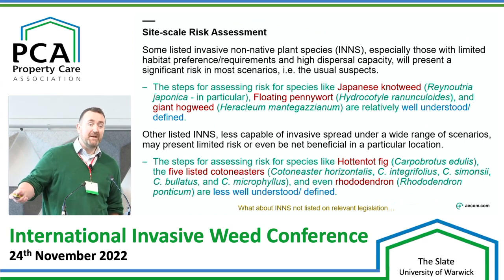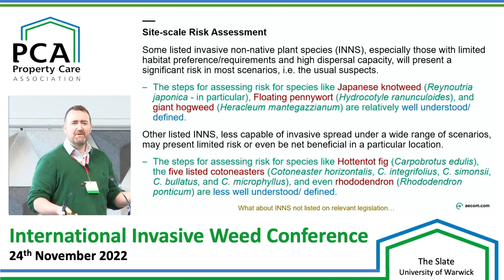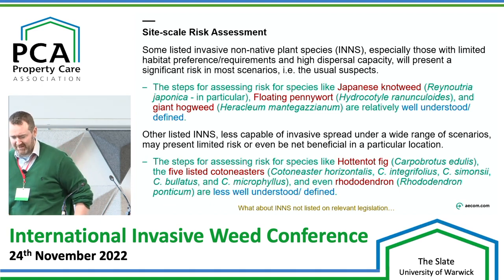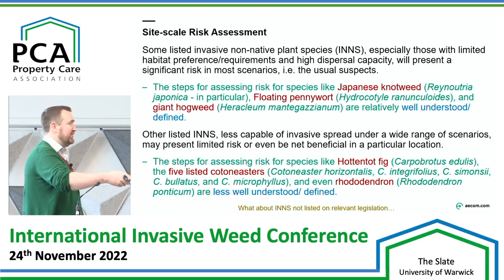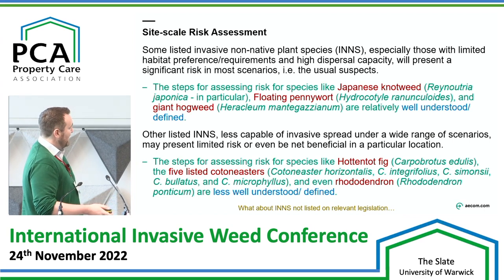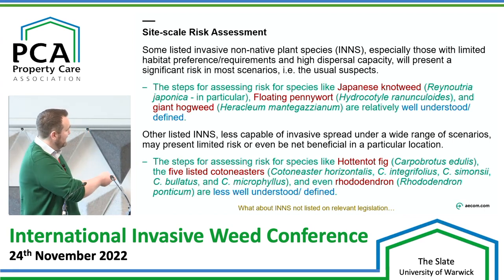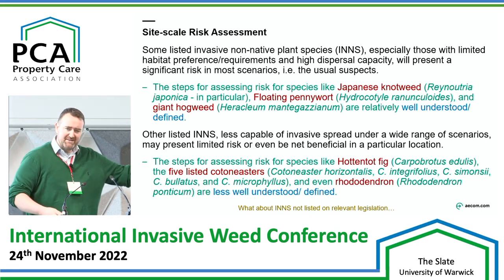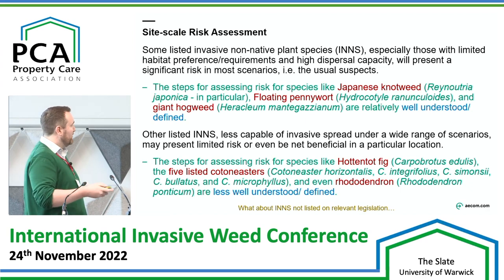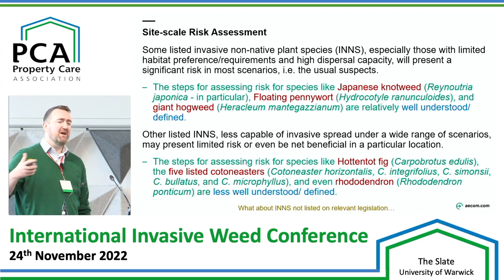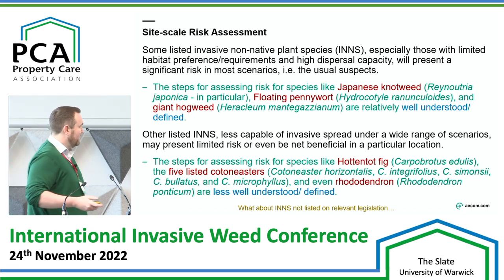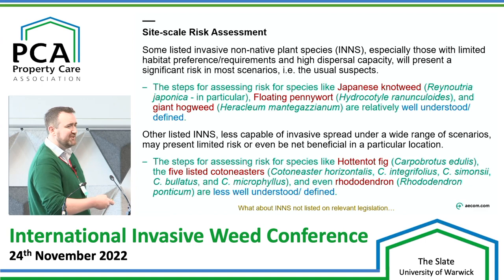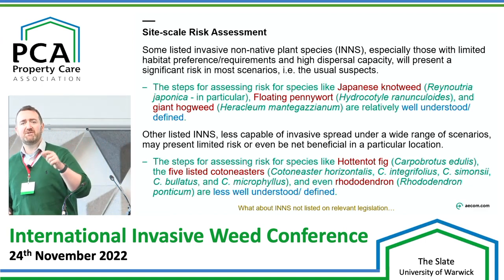When it comes to certain species — Japanese knotweed, floating pennywort, giant hogweed — the risk assessment process is pretty straightforward. If you've got it on your site, you don't really want it there, so you're going to try and control it if that control is feasible. For higher-risk species that can essentially colonise most types of habitats and have a very good ability to spread, they're usually going to have some significant impact and you'll want to get rid of them if control is feasible. But that's not necessarily the case for other species that have limited habitats within which they're impactful.